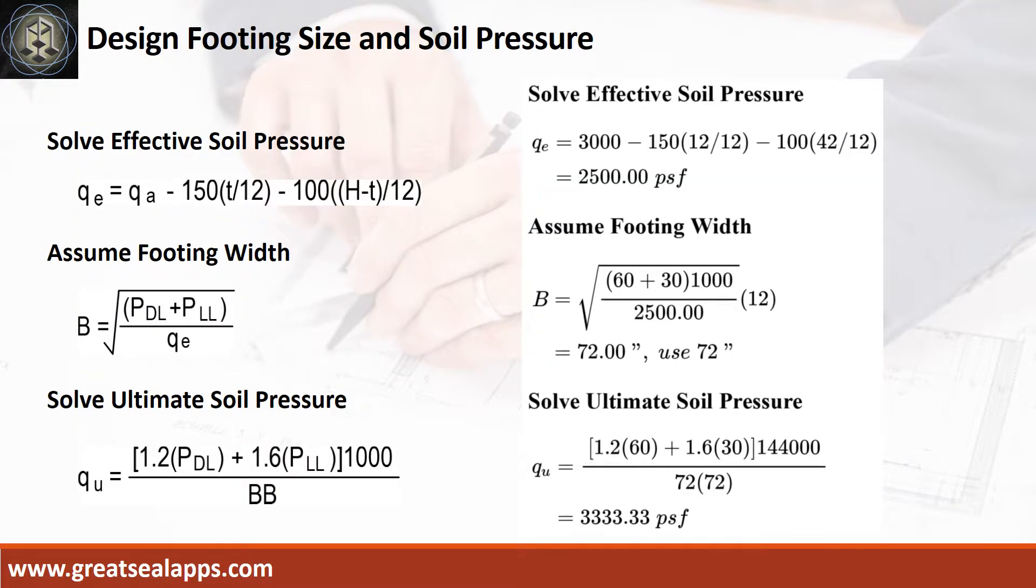Given allowable soil pressure equals 3000 PSF, assumed footing depth equals 12 inches, and depth from natural grade line equals 4 feet 6 inches, the effective soil pressure is 2500 PSF.